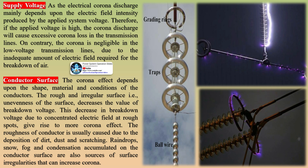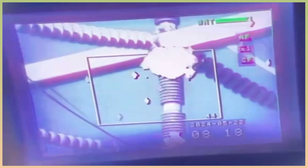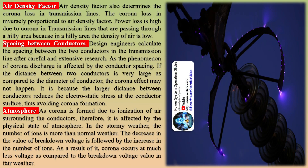Supply voltage: since corona discharge mainly depends upon the electric field intensity produced by the applied system voltage, if the applied voltage is high, the corona discharge will cause excessive corona loss in the transmission lines. On the contrary, corona is negligible in low-voltage transmission lines due to the inadequate amount of electric field required for the breakdown of air.